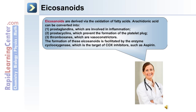The fourth group of hormones are known as eicosanoids, derived via the oxidation of fatty acids. Arachidonic acid can be converted into: number one, prostaglandins, which are involved in inflammatory responses; number two, prostacyclins, which prevent the formation of the platelet plug; and number three, thromboxanes, which are vasoconstrictor molecules. The formation of these eicosanoids is facilitated by the enzyme cyclooxygenase, which is a target of COX inhibitors such as aspirin.